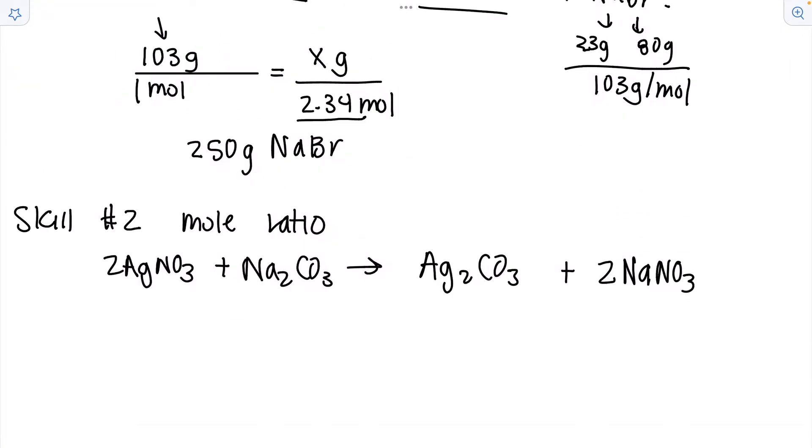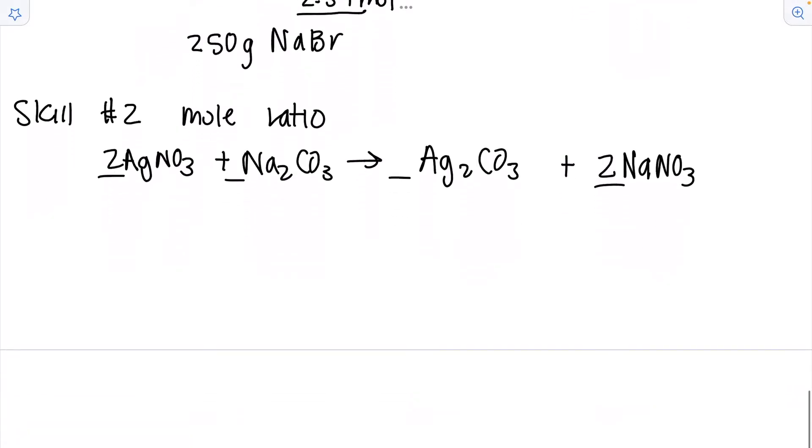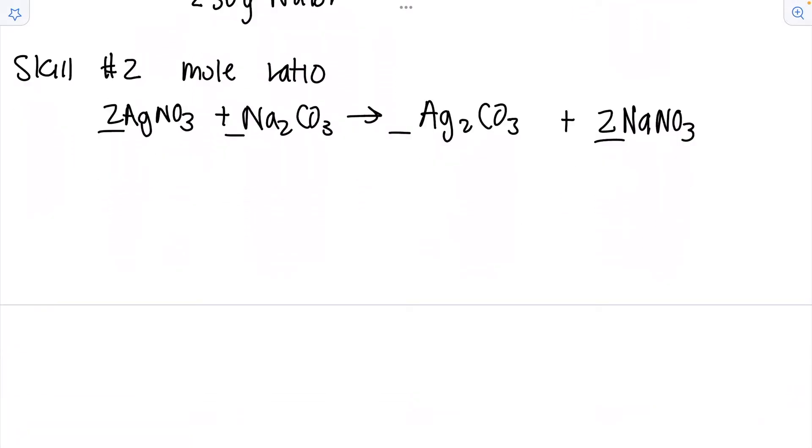Skill number two, mole ratios using coefficient of a balanced chemical equation. When you have a balanced chemical equation there are numbers in front signifying how much of the salt is needed to do the reaction. These are also the mole ratios. So in my chemical equation here two moles of silver nitrate will produce one mole of silver carbonate.